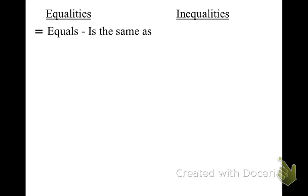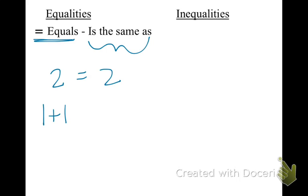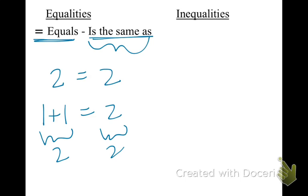We know what this equal sign is — equals means the same as. So 2 is equal to 2, or 1 plus 1 is equal to 2. This side equals 2, this side equals 2 — the same as.